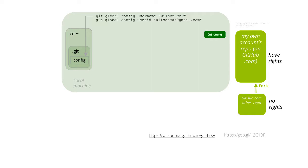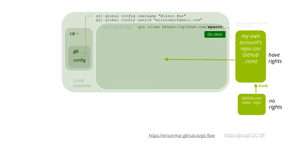Most IDEs incorporate commonly used git client functionality into their software. I recommend that you create an account folder to hold all your various repositories. Be in that folder when you clone a repository from GitHub. Git then creates that repo's folder and within it a folder named .git to hold objects that track changes to the repository.